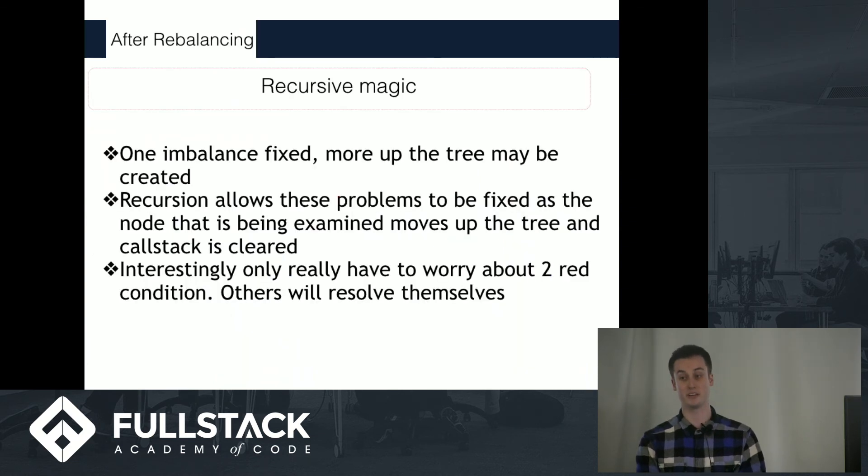Those are the three main imbalance states and how they can be resolved. It might be helpful to look at the code a bit more in detail, but it's important to note in this implementation that I've included, once one imbalance is fixed at any node, as you recurse back up through the tree, it's possible that more imbalances have been created. But the recursion actually tests for this at each black node, so it essentially solves itself.